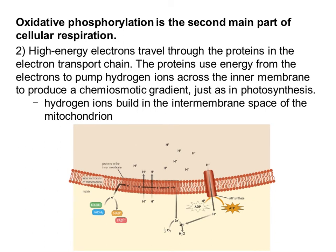Step two is that high-energy electrons are going to travel through the proteins in the electron transport chain. Just like we saw in photosynthesis, this is going to provide energy for active transport to occur. What's going to happen is that hydrogen ions are going to get pumped from low concentration down in the matrix to high concentration up in the intermembrane space, producing a chemiosmotic gradient with hydrogen ions built up in the intermembrane space.